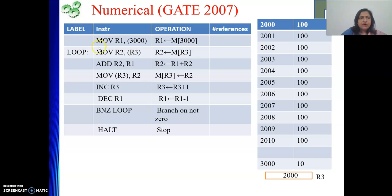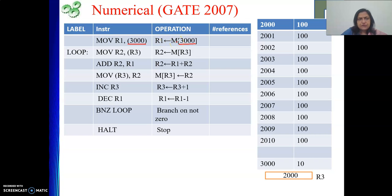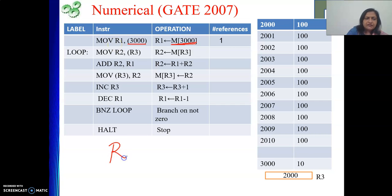The first instruction is MOV R1, [3000]. The bracket notation represents direct addressing mode — at address 3000 in memory, we get the data that is loaded into R1. This is memory direct addressing mode, not memory indirect. So from memory location 3000, we bring one data value into register R1. As part of data reference only, we have referred to memory once. The value loaded into R1 will be 10, which is the content of memory location 3000. Number of memory references: 1.